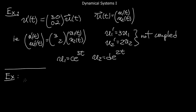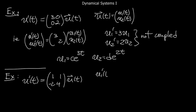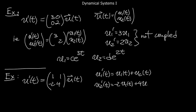Now let's do another example where the matrix is not diagonal — say the matrix [1, 1; -2, 4]. Writing this out: u₁' = u₁ + u₂ and u₂' = -2u₁ + 4u₂. This is clearly an honestly coupled equation — you can't solve for u₁ and u₂ separately, since they're linked on the right-hand side. So some ideas are needed to solve this.